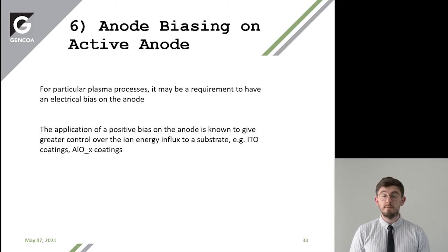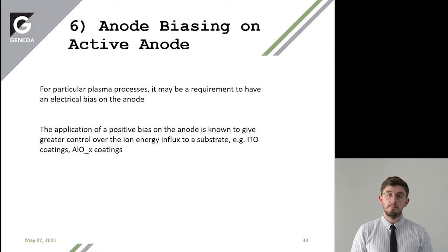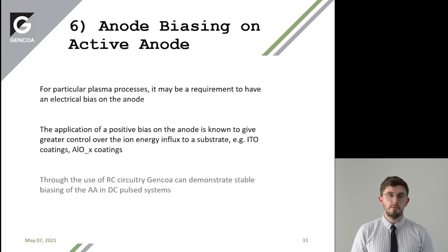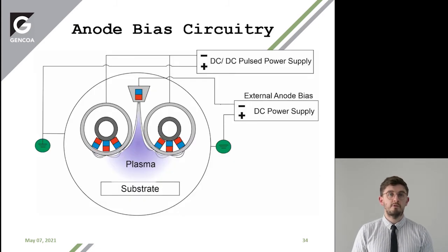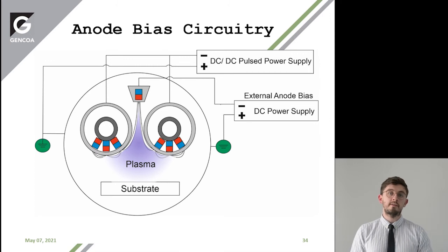For example, in indium tin oxide coatings you may want a lower cathode voltage for your process, as well as in aluminium oxide coatings. Through the use of resistor-capacitor circuitry, we've been able to stably demonstrate that we can bias this anode. This is an example of a schematic of the system — biasing the two cathodes from the same DC pulsed power system, and then using an external DC power system on the anode.